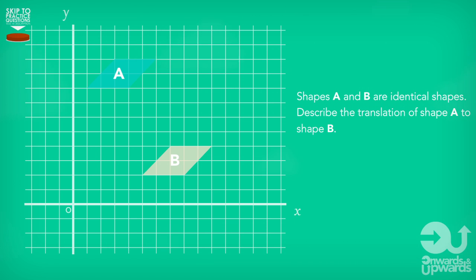Then we record how far we move on our y-axis. Up is positive and down is negative. So in this case, along the x-axis, we move plus four places, that's to the right. And along the y-axis, this point is negative six places, so that's downwards. Our final column vector, our translation, would be four and minus six.